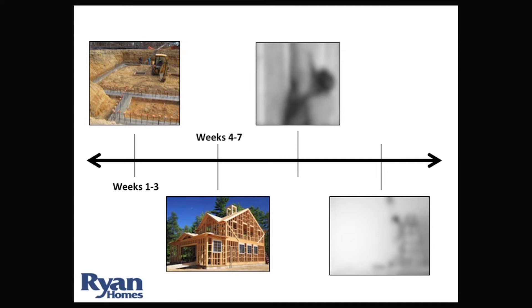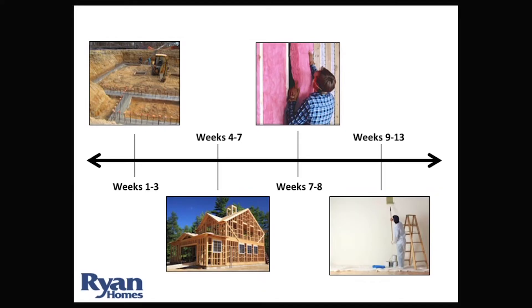Then in weeks seven and eight, the workers are putting in the insulation and the drywall. And finally, in weeks nine through thirteen, this is what I call the finishing touches of the house — so the workers would put in the flooring, the trimming, painting the walls, light fixtures, outlets, things like that. Hopefully you could hear as I was describing this process that I was trying to emphasize that a large majority of this is done using manual labor.